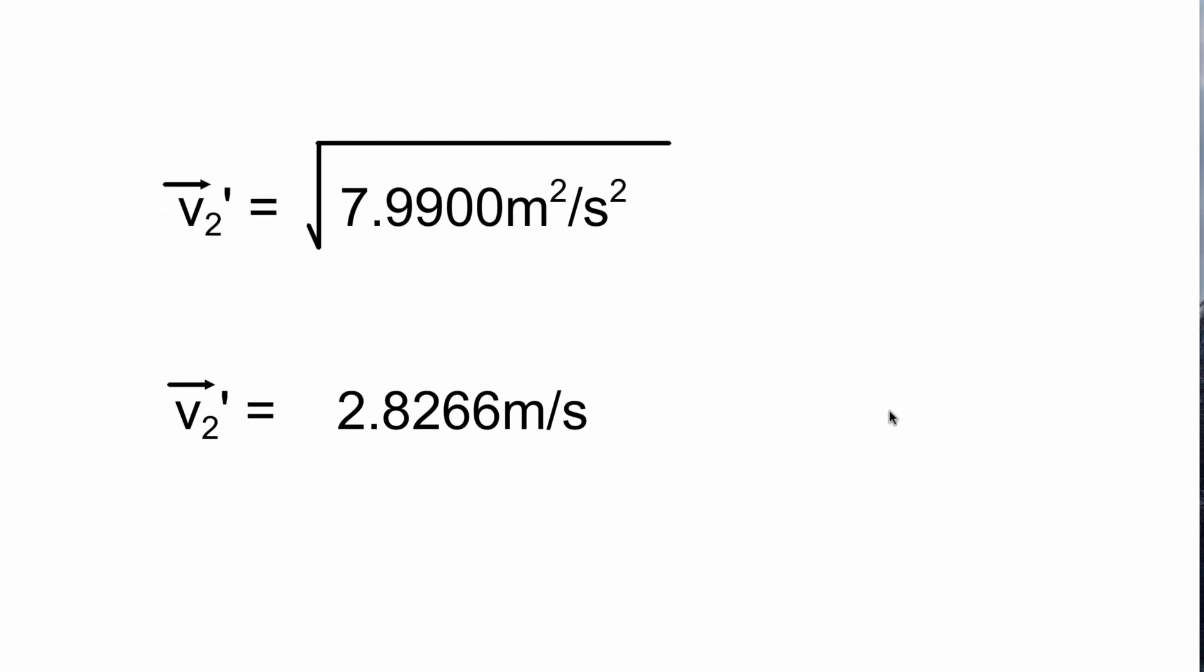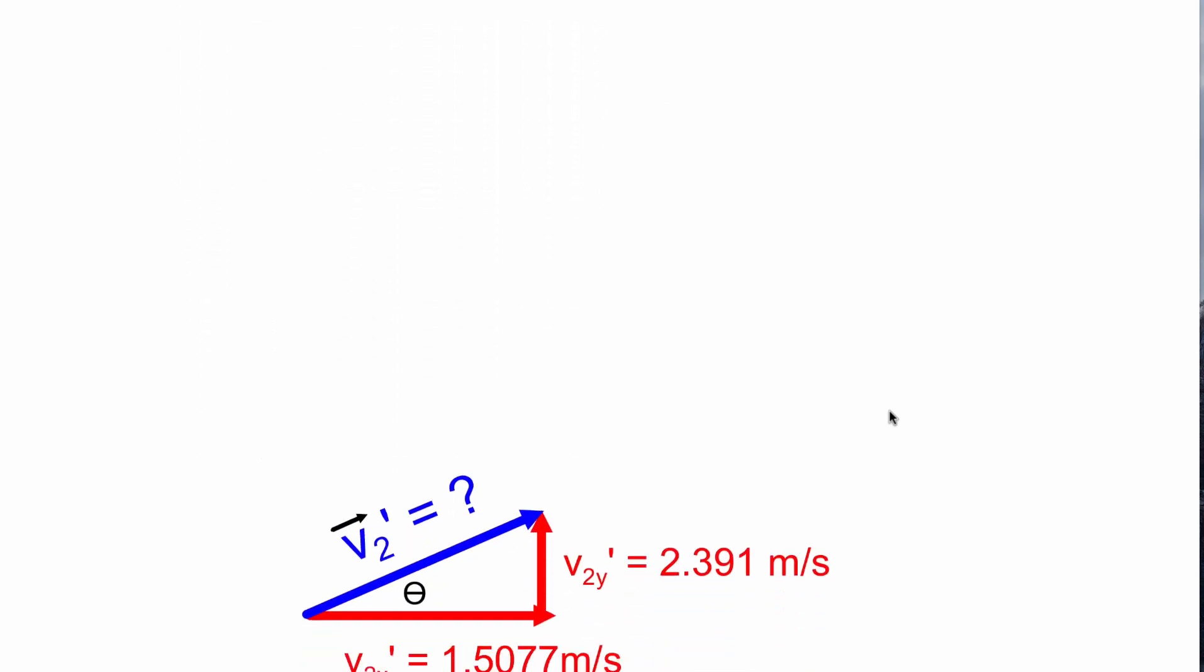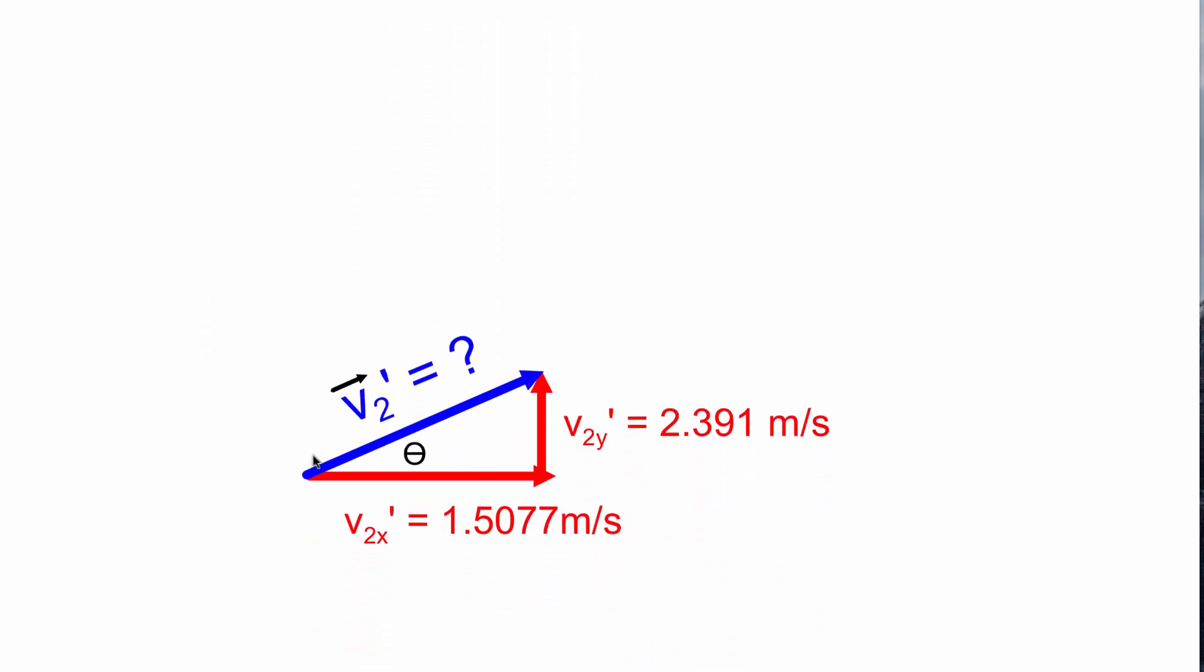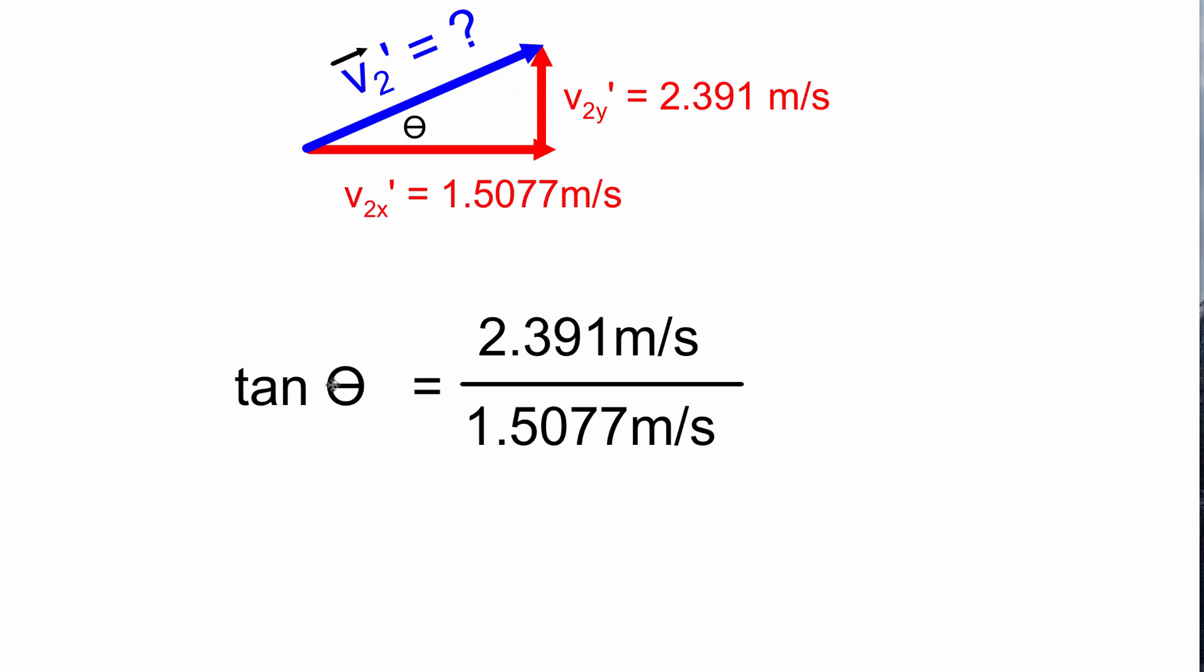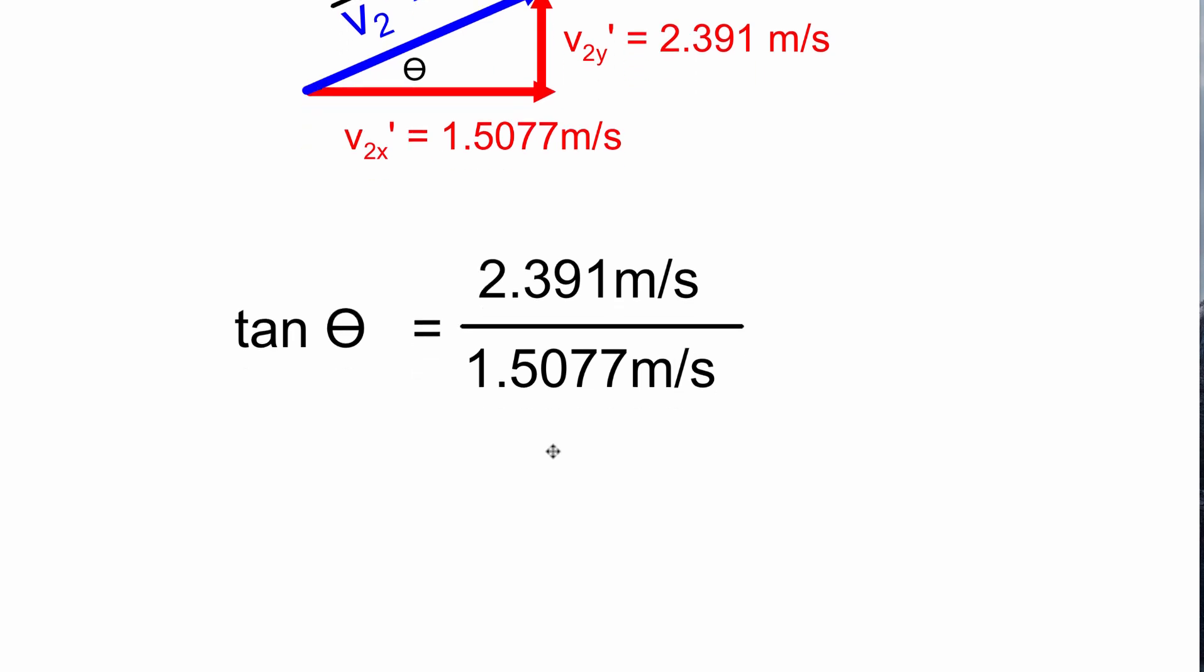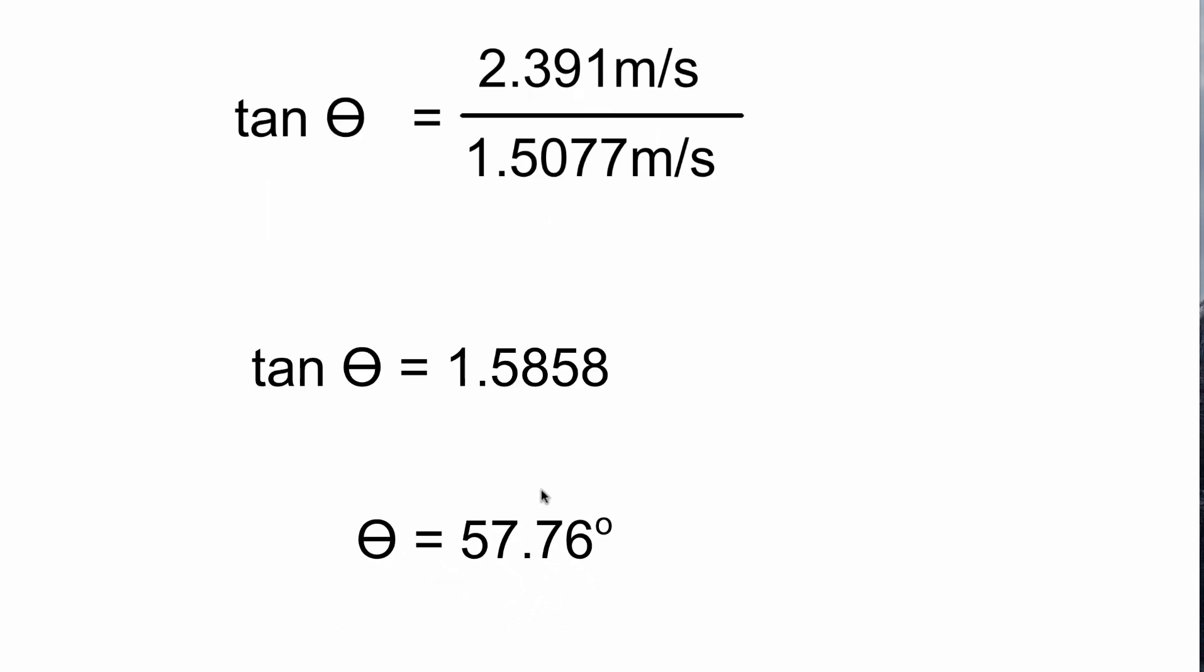Here was our triangle. We're trying to solve for theta right here. This is the opposite side, this is the adjacent side, so we're going to be using tan. Tan of theta is 2.391 meters per second divided by 1.5077 meters per second. That gives you tan of theta equals 1.5858 repeated. Take the second function or inverse of tan and that gives you 57.76.